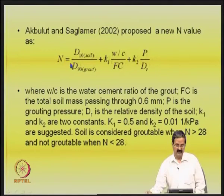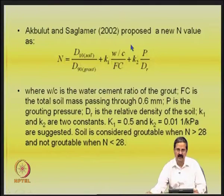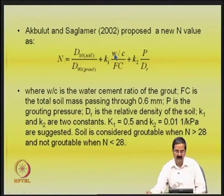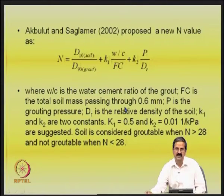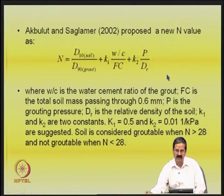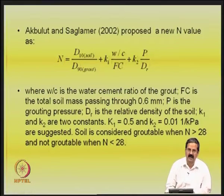A newer N value has been proposed which compares D10 of the soil and D90 of the grout. The previous methods only considered grain size distribution of soil and grout, without accounting for water-cement ratio, fines content, grouting pressure, and relative density of the soil. These researchers gave empirical relationships recognizing these important variables. If the relative density of the soil is higher — meaning it is more dense — you cannot grout it as easily. If the grouting pressure is higher, you can grout more. If the water-cement ratio is higher, grout can flow more easily.